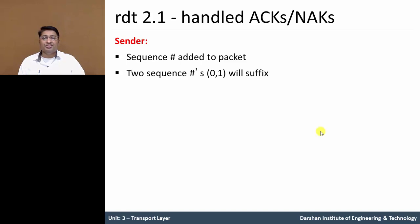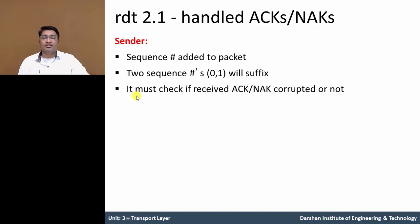The sequence number is either 0 or 1 — it is sufficient to add just 0 and 1 as sequence numbers in the packet. The sender also checks the acknowledgement and negative acknowledgement packet with the sequence number to determine if it was received corrupted or not.